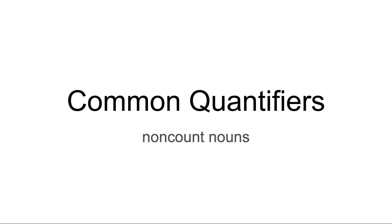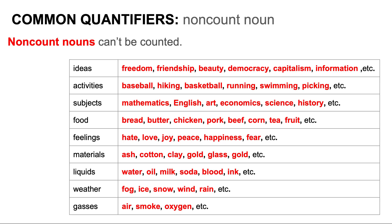Now let's talk about non-count nouns. Non-count nouns can't be counted. They include ideas such as freedom, friendship, beauty, and democracy; activities such as baseball, hiking, and basketball; subjects such as mathematics, English, and art; food such as bread, butter, and chicken; feelings such as hate, love, and joy; materials such as ash, cotton, and clay; liquids such as water, oil, and milk; weather such as fog, ice, and snow; and gases such as air, smoke, and oxygen.